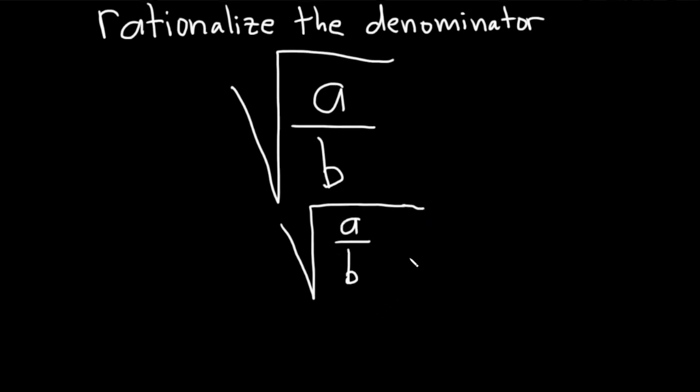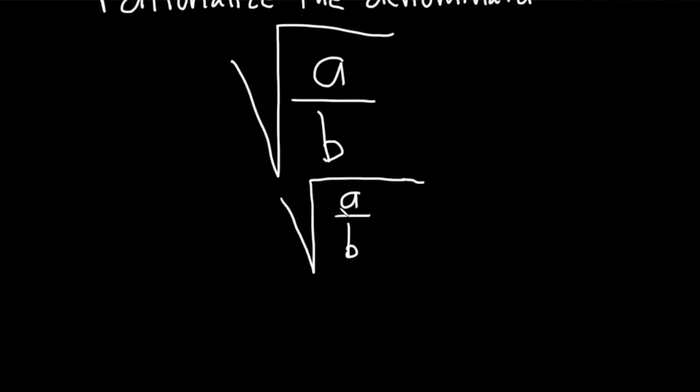So we have a b, we need a b squared. So what we'll do is we'll multiply by b over b. Because basically we're multiplying by one in a really clever way. And that's going to give us a b squared on the bottom.